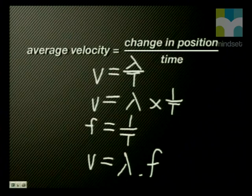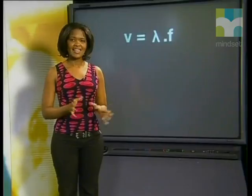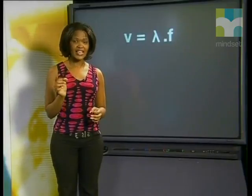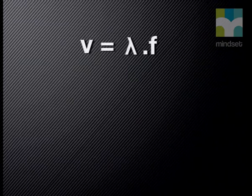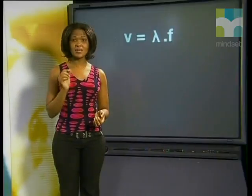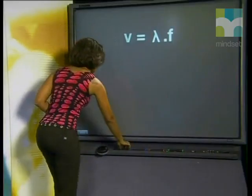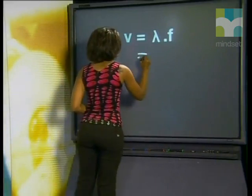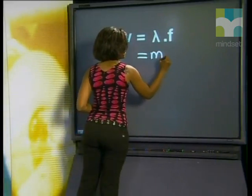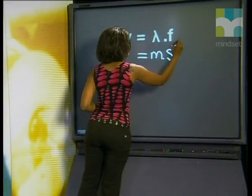This equation is called the wave equation and is used to calculate the motion of the wave moving through a medium. Let's check the units of v in the wave equation. We know that lambda has the SI unit meters, and frequency is measured per second, so the unit is meters per second, written as m·s to the minus one.